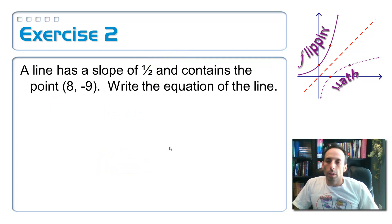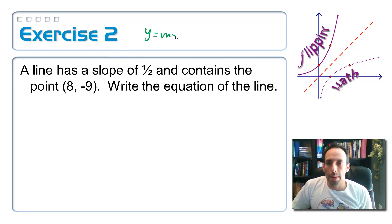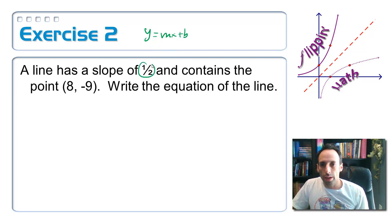Maybe a little bit tougher, just a little bit. Line has a slope of a half and contains the point eight negative nine. So sure I can still use that same form of y equals mx plus b. But this time I don't have a b. All I have is the m. To find the b, I'm going to have to substitute the point eight negative nine into my equation and then solve for it.